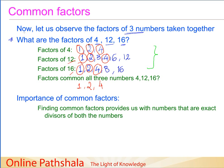A very obvious question would come to mind — why are we studying about common factors? What is the real importance of common factors? If you think about it intuitively, what is a factor? A factor gives us a division — it is a number by which we can divide another number exactly, so that the remainder is 0. When we take sets of numbers and try to find common factors, we are trying to find exact divisors applicable to the entire set of numbers under consideration.